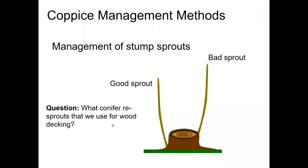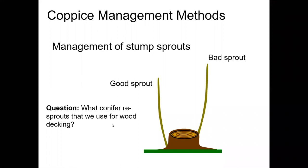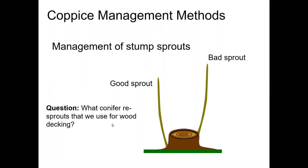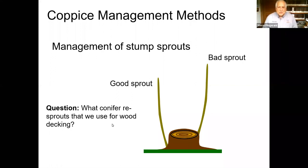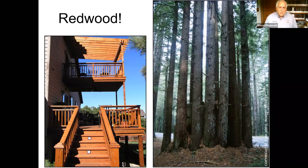The answers coming in say cedar and redwood. And the answer is redwood. Here is a redwood old-growth stump that you can hardly see because of the sprouts that have come up off it. These large sprouts are later harvested and used — this would be called second-growth redwood — and are used in milling up redwood for decking.